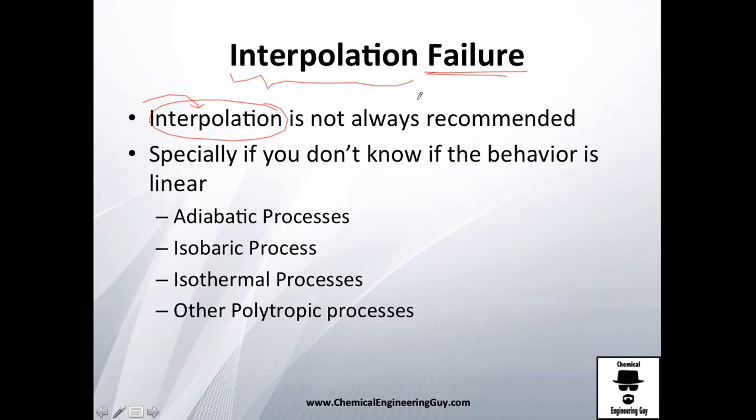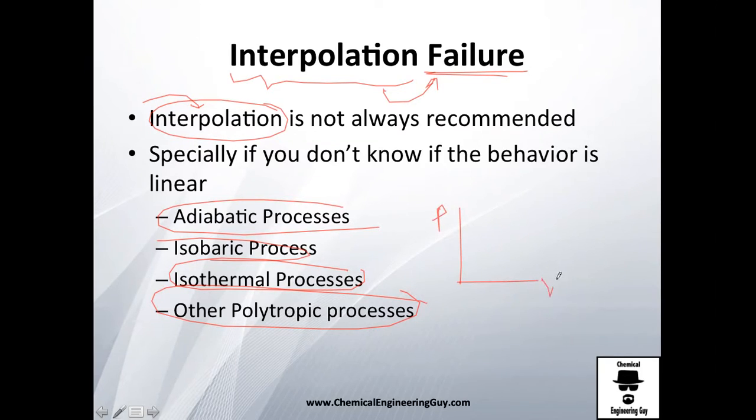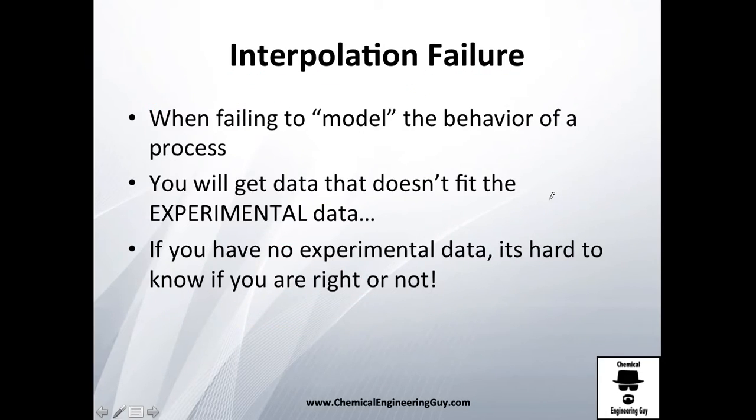You're probably going to fail especially with adiabatic processes, isobaric processes, isothermal processes, and other polytropic processes. Sometimes you think they are linear because maybe it's twice the pressure or twice the volume. But when we fail to model that, we call it a failure. It's important to know that if the experimental data shows another value, we're going to accept the experimental data as true and that model will not be acceptable.